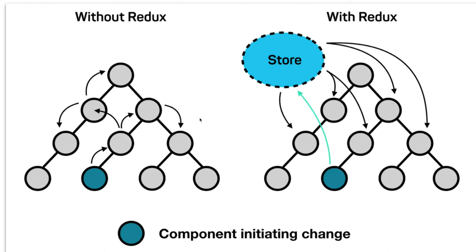The other option is to manage a global state using a store, where any component can access or update any state object. We can have an isolated store where each component can talk to it — requesting state or sending updates. Whenever the state is updated, the change propagates to all components. This approach, which comes into the Redux framework, reduces the complexity of state updates and unnecessary re-rendering of components.